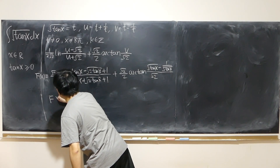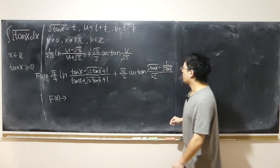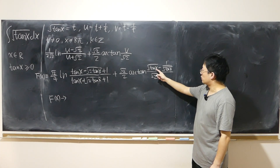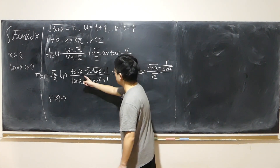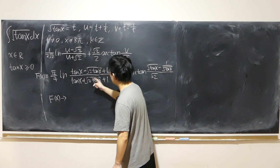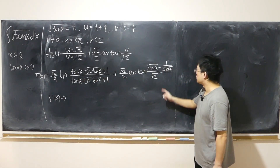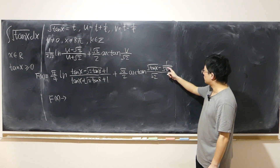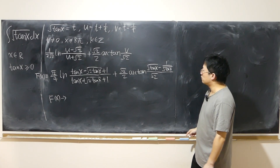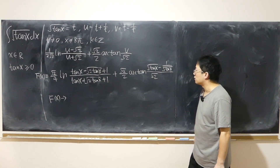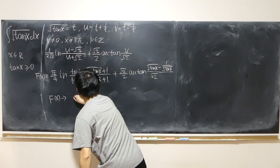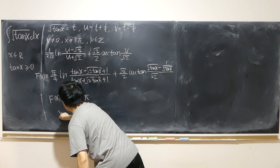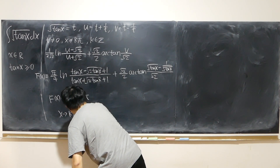As x approaches k pi, tangent x approaches 0. So we get: log of 1 is 0, and then v equals 0 minus 1 over positive 0, which is negative infinity. So arc tangent of negative infinity is negative pi over 2. In the end, F(x) approaches negative root 2 over 4 times pi as x approaches k pi from the right-hand side.